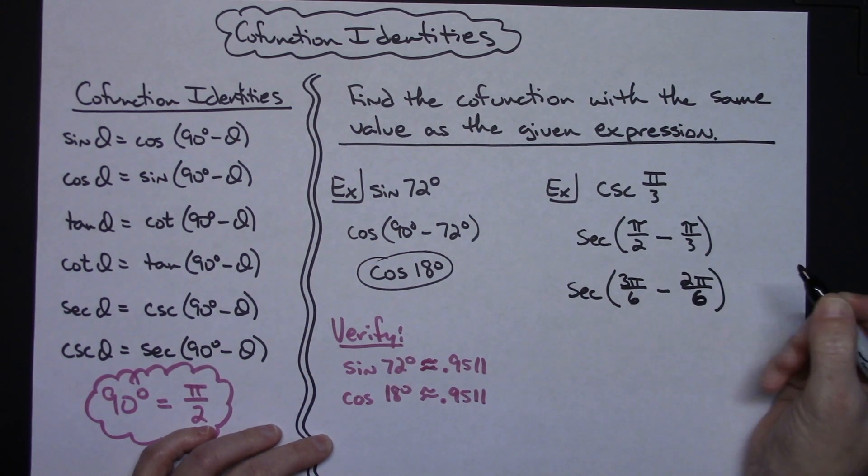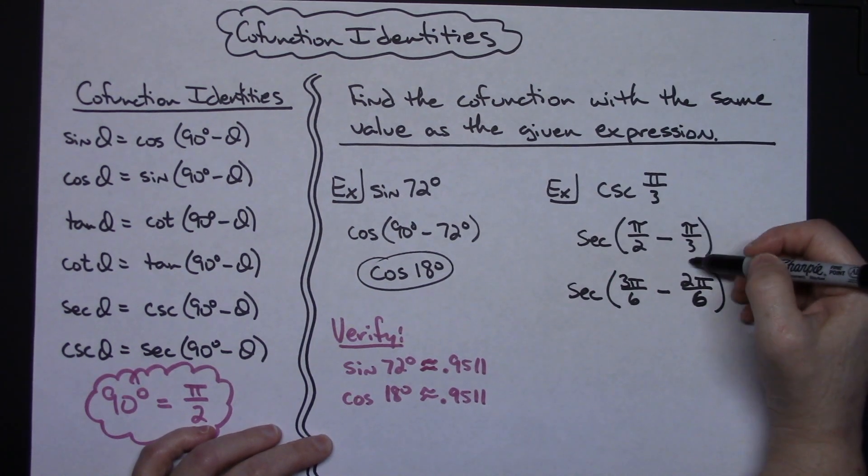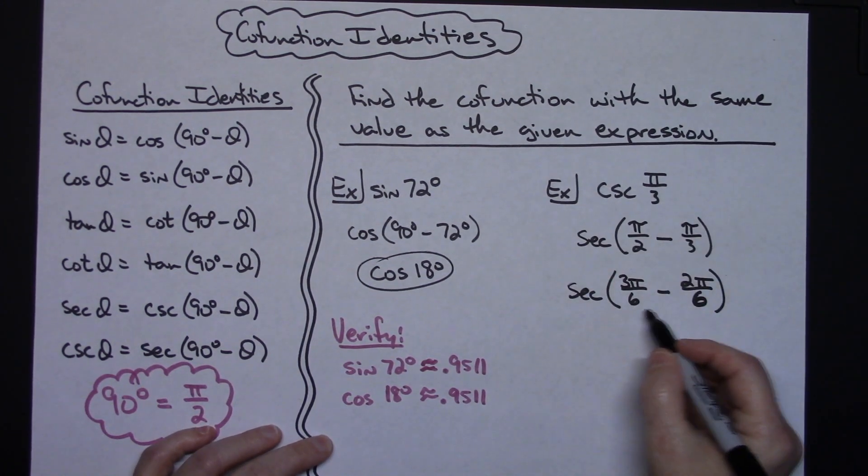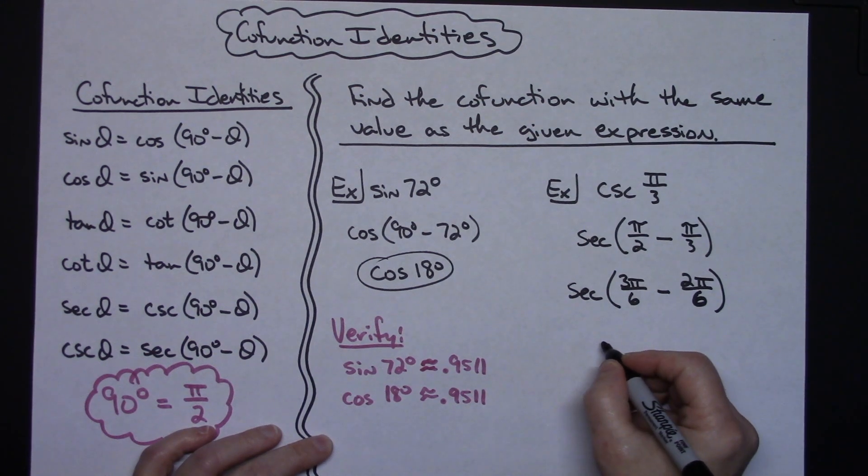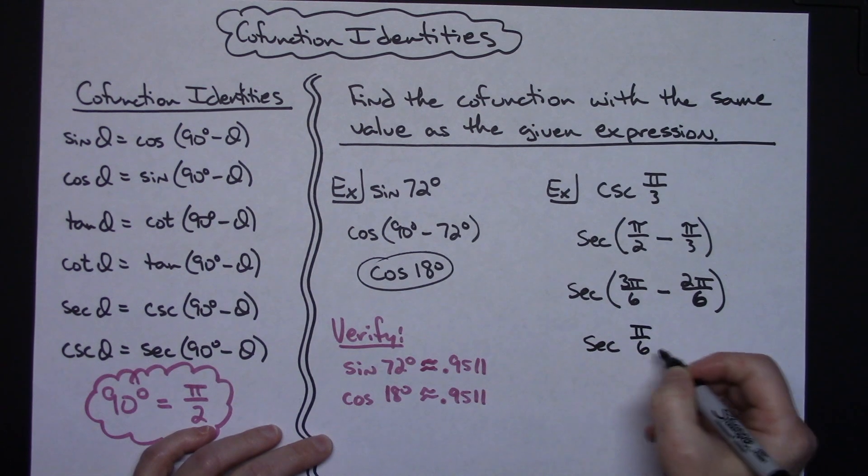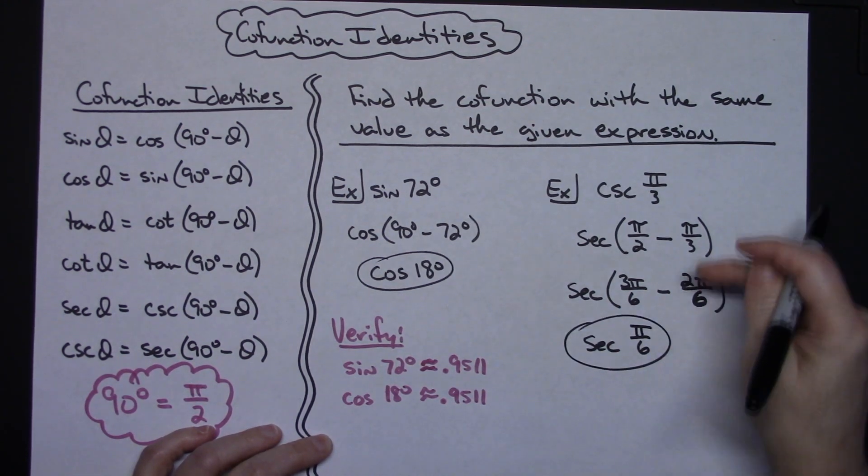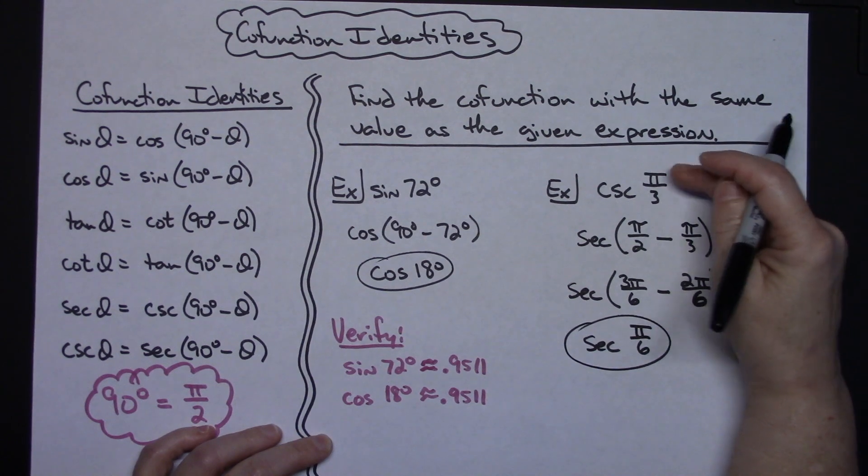That's just getting common denominators, multiplying this fraction by 3 over 3, multiplying this fraction by 2 over 2. Now I've got common denominators I can subtract, so it's going to be the secant of pi over 6. So this cofunction has the exact same value as the cosecant of pi over 3.